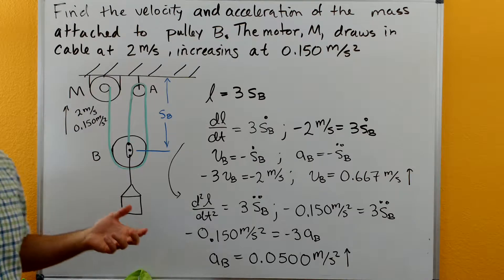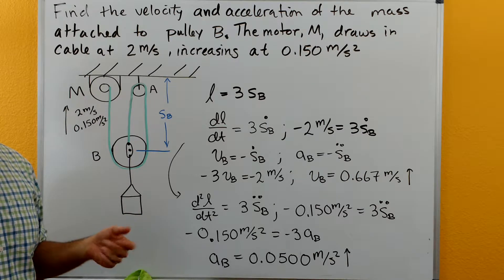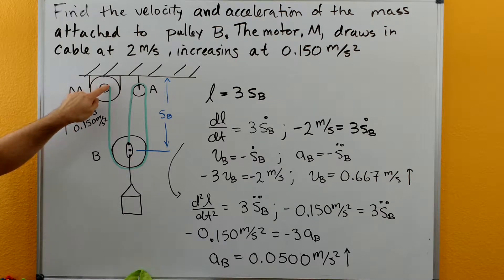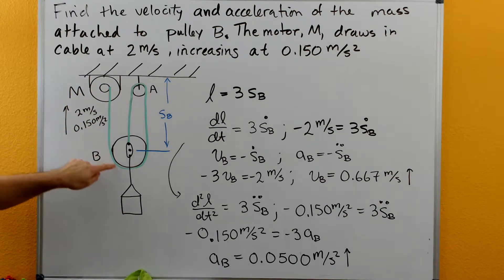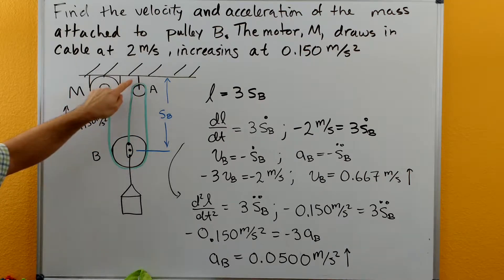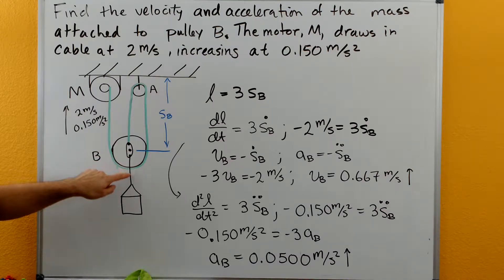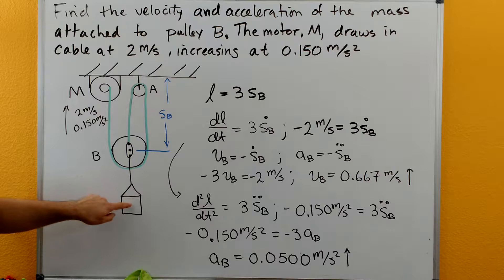One of the important things to do whenever you have a pulley system is determine how many ropes you have. If we start at the motor and come around with this green rope, we have one continuous rope until it's tied off at B, and then a separate rope from B down to our mass. We've got different colors for these two different ropes.